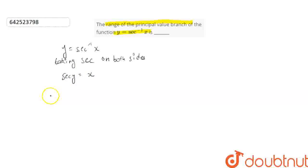Principal value branch for secant y gives 0 to pi.